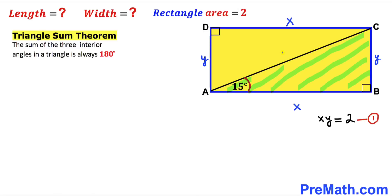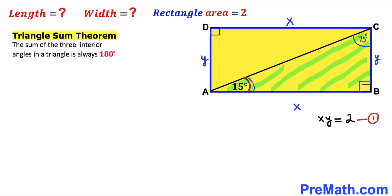Now let's focus on right triangle ABC and recall the triangle sum theorem: the sum of three interior angles is always 180 degrees. We know angle BAC is 15 degrees and angle ABC is 90 degrees, so therefore the remaining angle BCA has got to be 75 degrees.